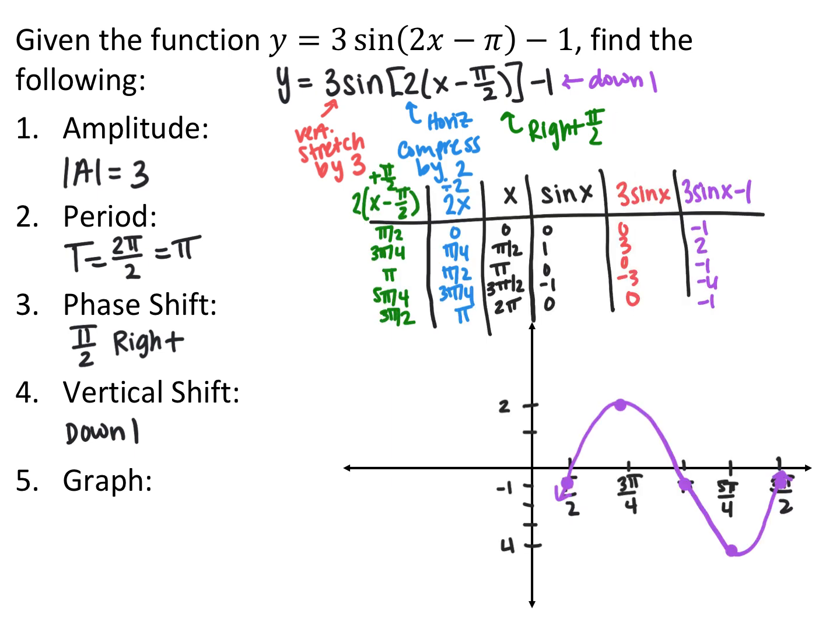Using the table method, multiply all y-coordinates by 3, then subtract 1 to stretch and translate down. For x-coordinates, do the opposite: divide by 2, then add π/2 to shift right. Sine starts at its equilibrium and increases since it's positive sine. It starts at π/2, with the new equilibrium at y = -1, going up, middle, down, middle.